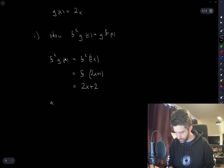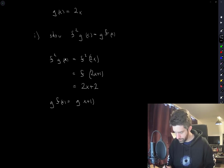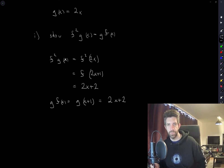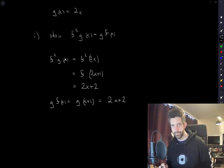On the other hand, g of f of x is equal to g of x plus 1, which is equal to 2x plus 2. So Part 1 is pretty straightforward.